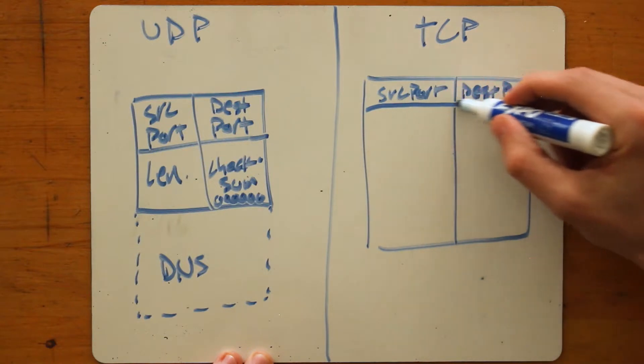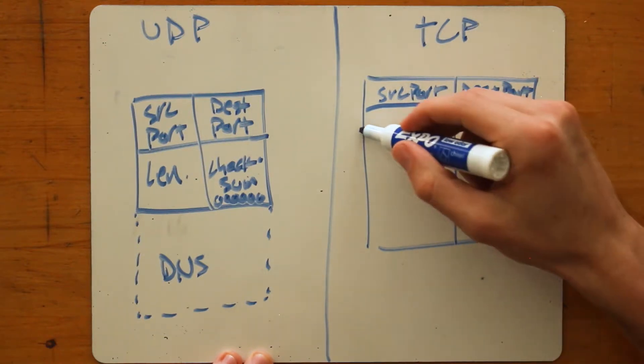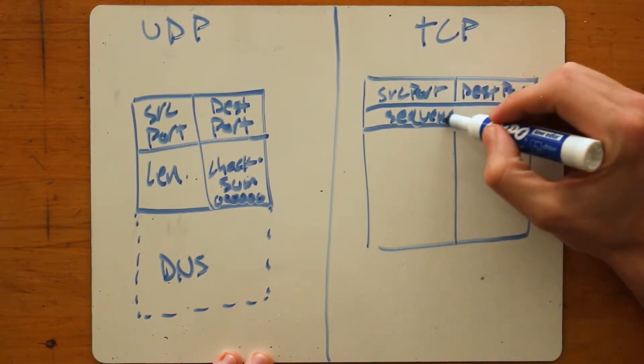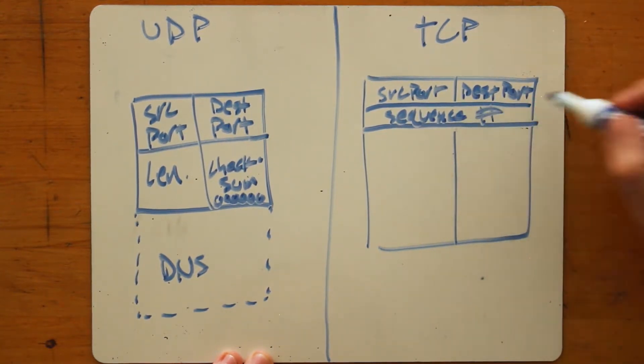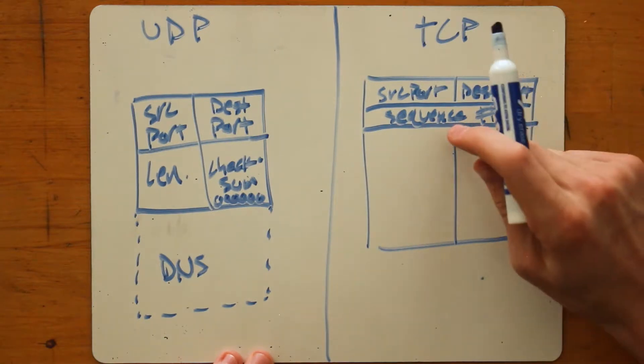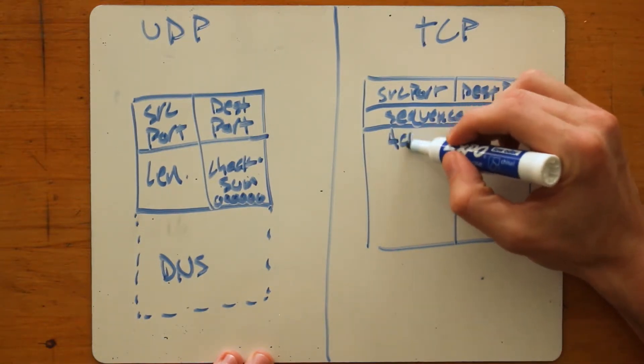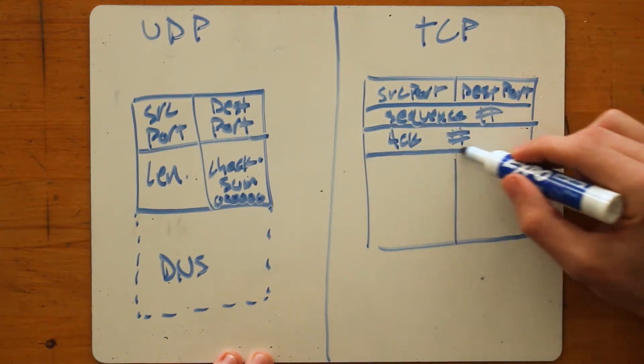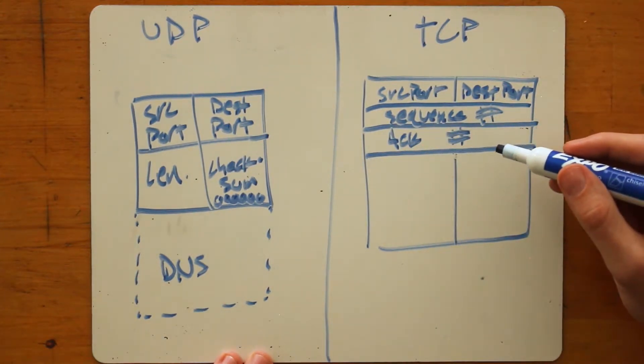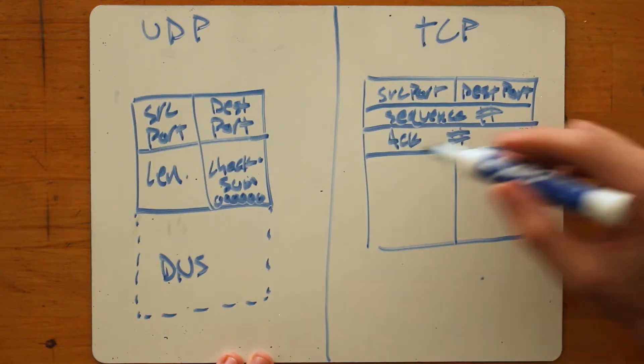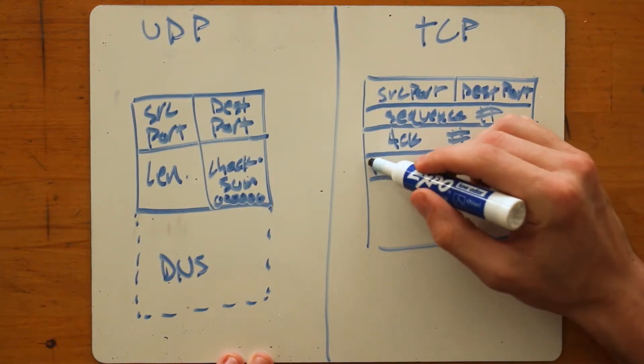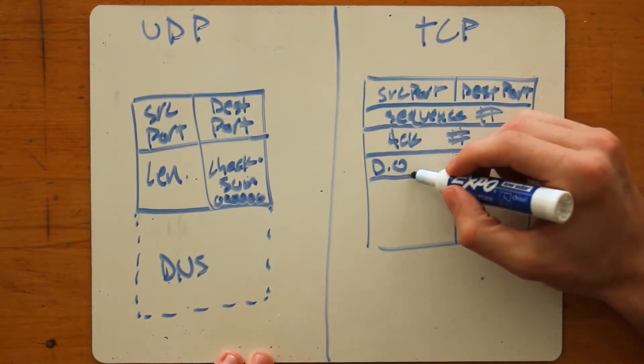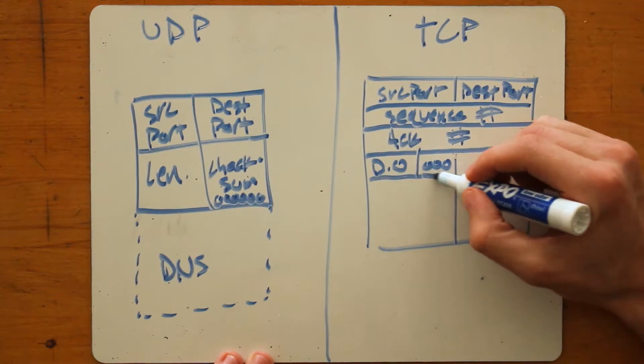Then you've got a sequence number. And in the next video, we'll look a little more at sequence number and why it matters, followed by an acknowledgement number. And same in the next video, we'll look more at sequence and acknowledgement numbers. Then you've got a field called the data offset, then you've got three reserved bits, which are always zeros.